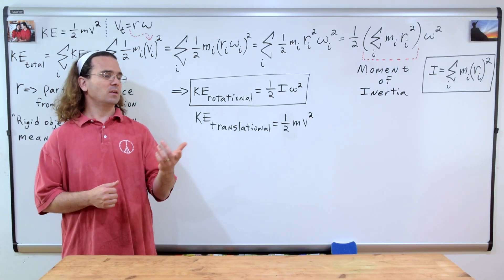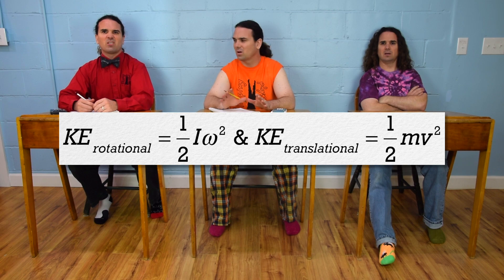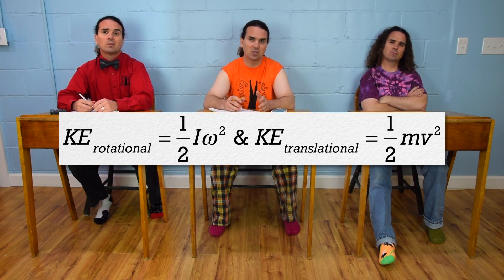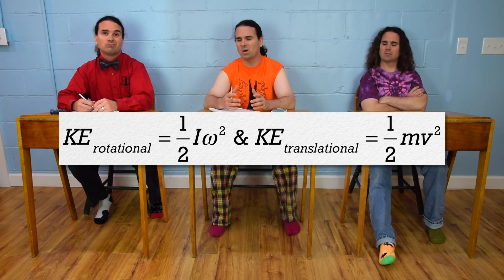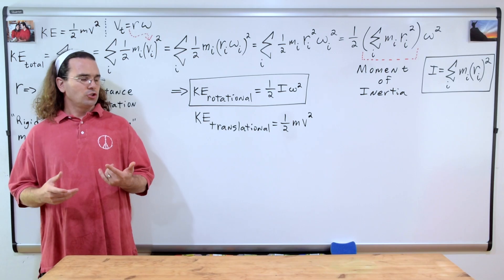Mr. P? Yes, Billy? Those two equations look very similar. They both have one-half times a quantity times the square of a velocity. That's kind of weird. Also, I get that rotational kinetic energy is the kinetic energy of a rotating object, and translational kinetic energy is the kinetic energy of the object moving from one place to another. But what is moment of inertia? Yeah, what is moment of inertia?